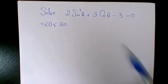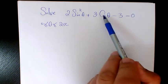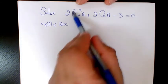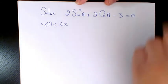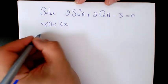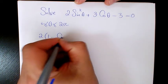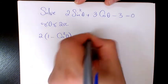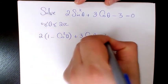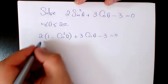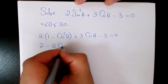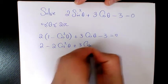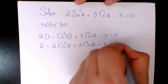As you can see, we have sine squared theta and cosine theta. I'm going to change sine squared theta to 1 minus cosine squared theta, so it's going to be 2 times (1 minus cosine squared theta) plus 3 cosine theta minus 3, which gives us 2 minus 2 cosine squared theta plus 3 cosine theta minus 3 equals 0.